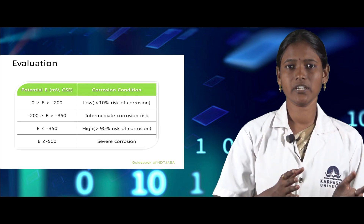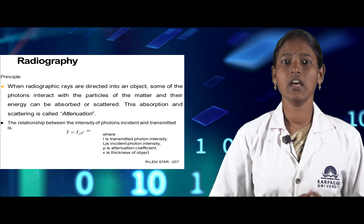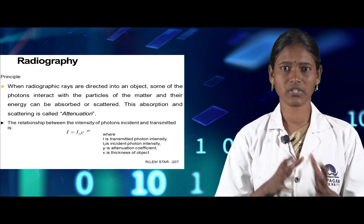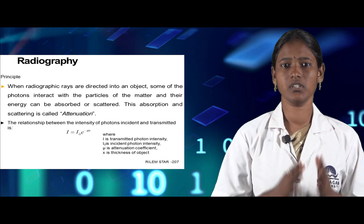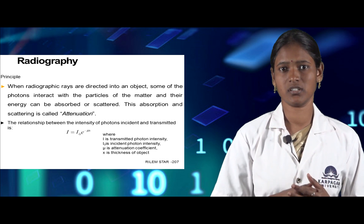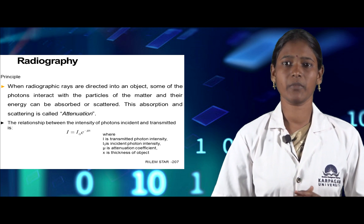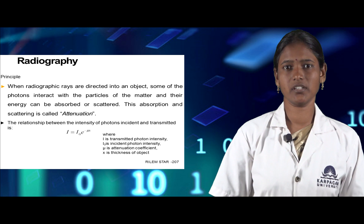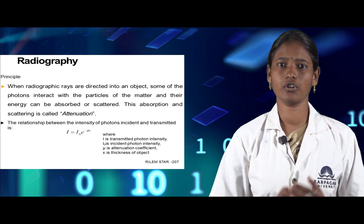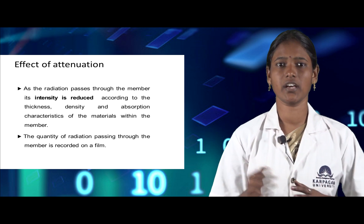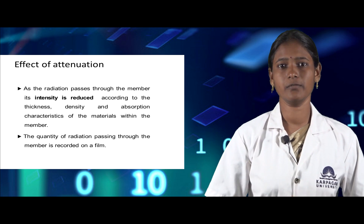The next type of non-destructive testing technique is radiography. When radioactive rays are directed towards an object, some photons interact with particles of matter and their energy is either absorbed or scattered — this is called attenuation. The relationship between the intensity of incident and transmitted photons is given by: I = I₀ × e^(−μx). As radiation passes through a member, its intensity is reduced according to the thickness, density, and characteristics of the material, and the quantity of radiation passed through is recorded on a film.